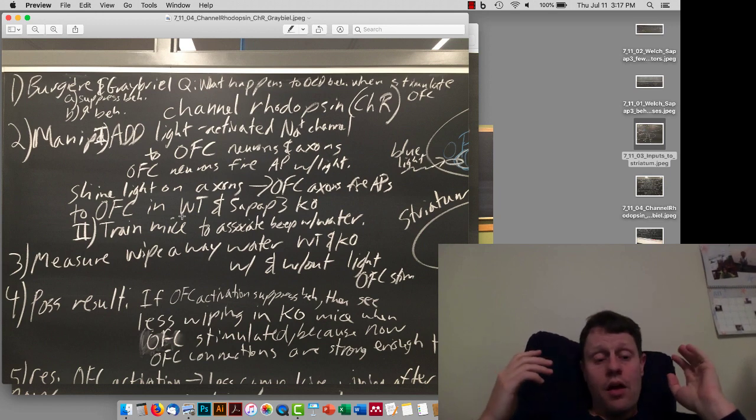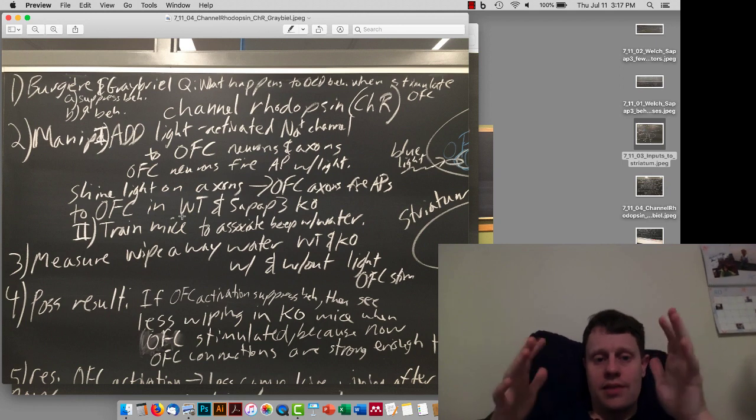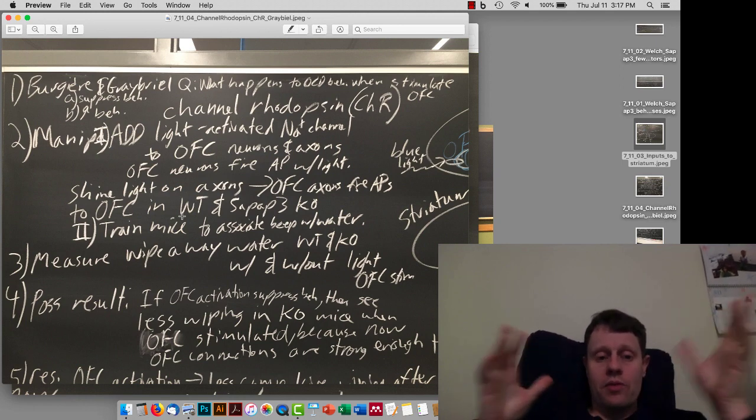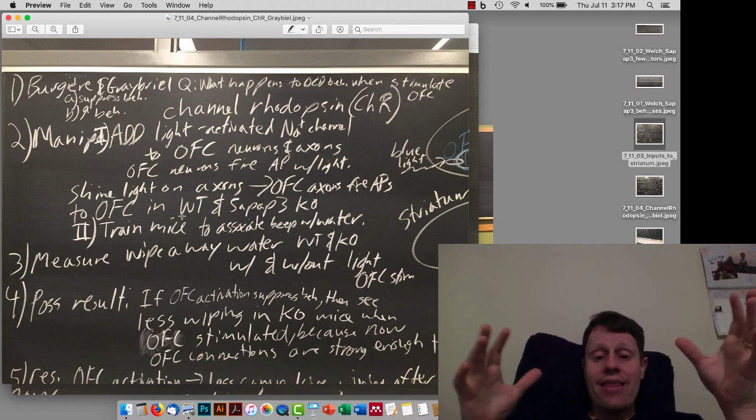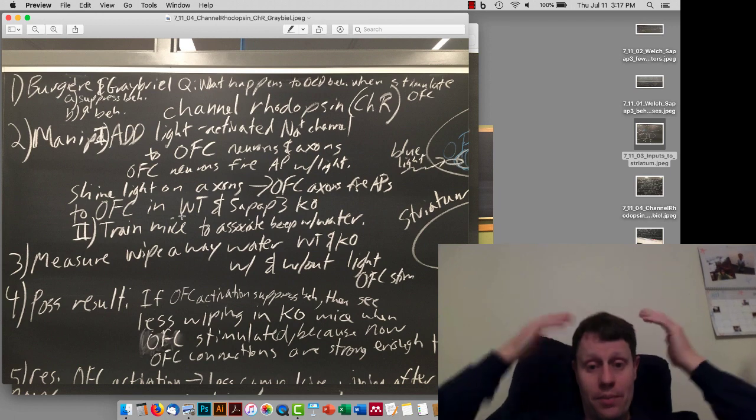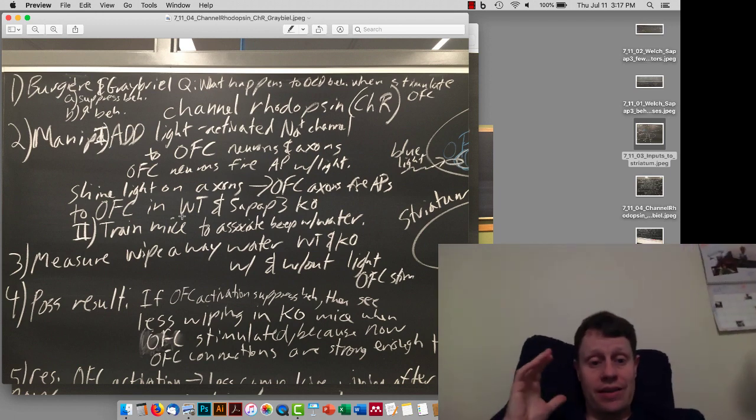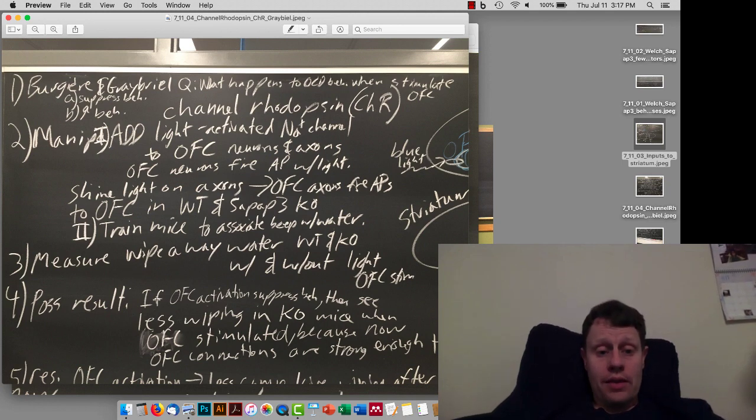But then, what we do for the mice is we have wild type and SAPAP3, but actually we're mainly going to focus on the SAPAP3 mice. So, the SAPAP3 mutant mice, we train them to associate tones with water, and then we take away that association and watch them continue to obsessively wipe their heads in response to just hearing this beep, this tone. And so, we measure the amount of wiping that they do.